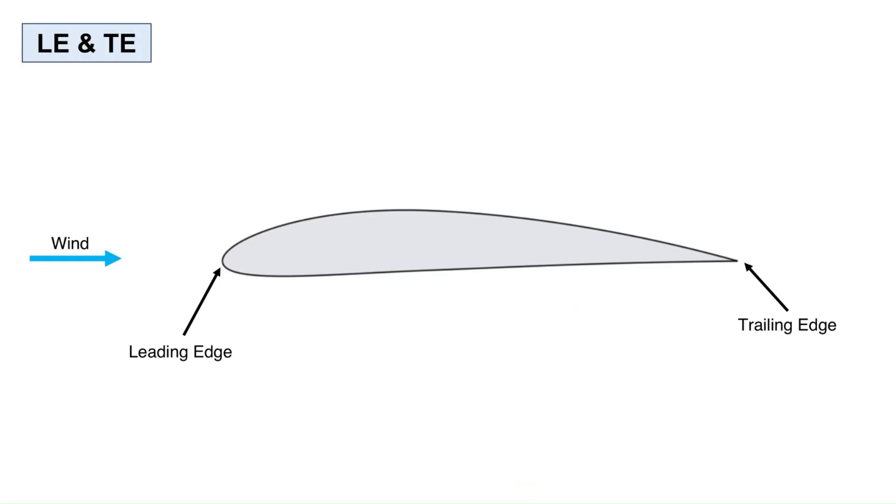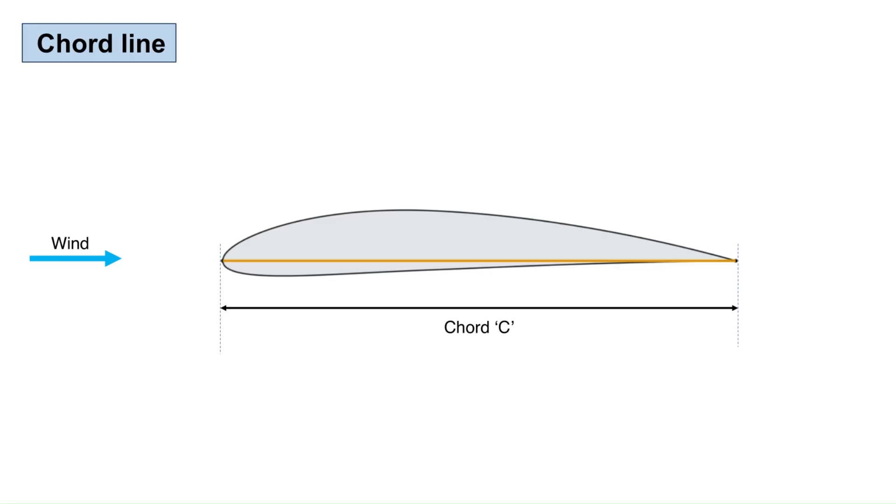The leading edge is the forward edge of the airfoil that encounters the oncoming air stream first. The air leaves the airfoil at the trailing edge, which is the rearmost point of the airfoil. The chord line is the straight line joining the most forward point on the leading edge to the aftmost point on the trailing edge. The length of the chord line is simply termed as the chord of the airfoil, represented by the letter C in equations.